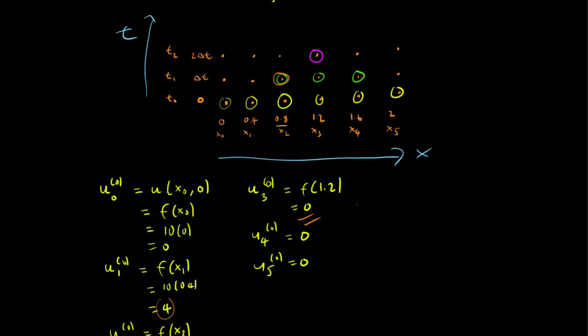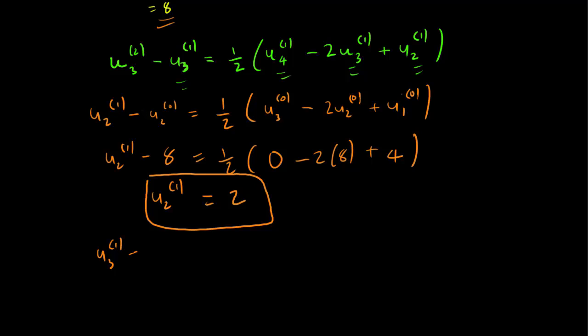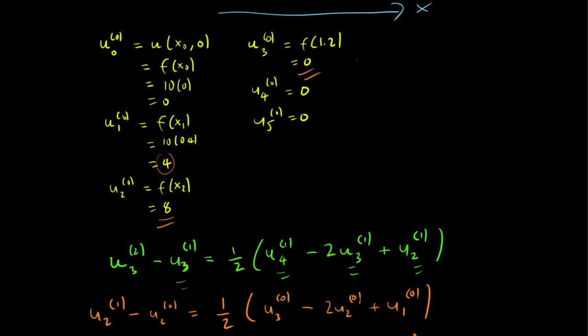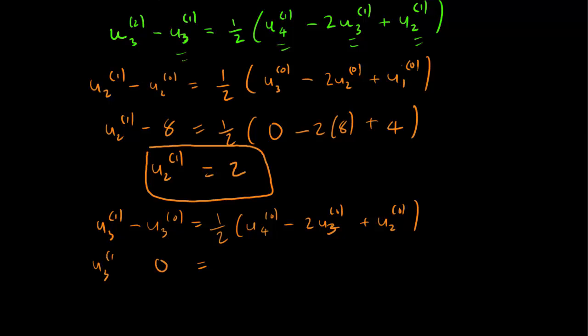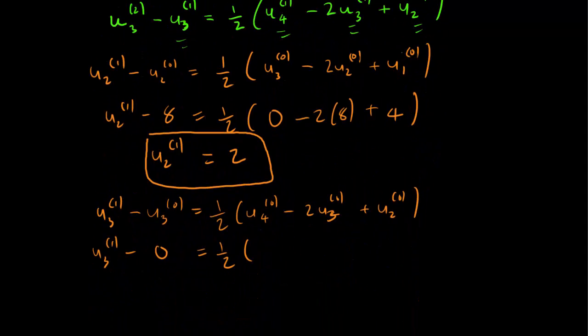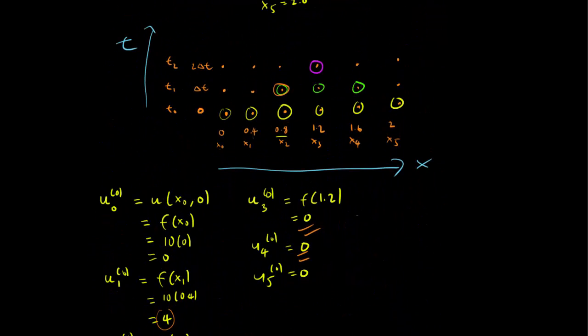u_3^1 minus u_3^0 is equal to 1 half u_4^0 minus 2 u_3^0 plus u_2^0. And let's see what those are. u_3^0, if we remember correctly, that's 0. u_3^0, so u_3^1 minus 0 equals 1 half. u_4^0 is also 0. So 0 minus 2 times 0. u_2^0 is not 0. u_2^0 is in fact 8. So when we solve for it, we get u_3^1 is equal to 4. So we've figured out what this thing is. Now we have one more green dot to go, and we're done.